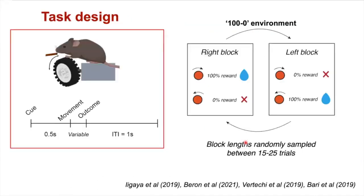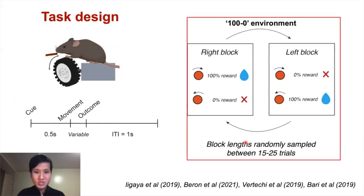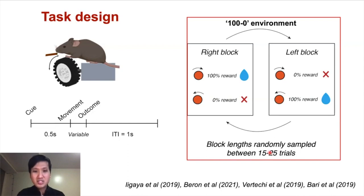We designed a behavioral task in head-fixed mice, where they can rotate a wheel in two opposing directions. We transitioned between two states: the right state where only right actions are rewarded, and the left state where only left turns are rewarded. These blocks switch randomly after 15 to 25 trials. We call this a 100-0 environment, and also tested mice in 90-10, 80-20, and 70-30 environments.